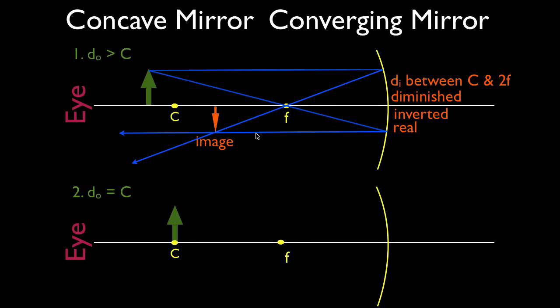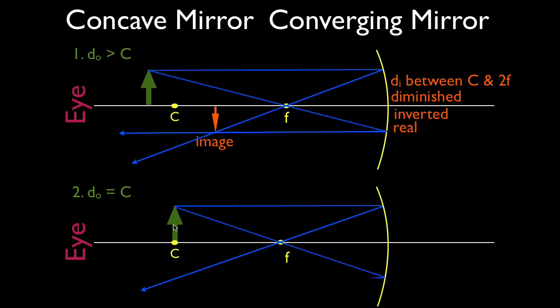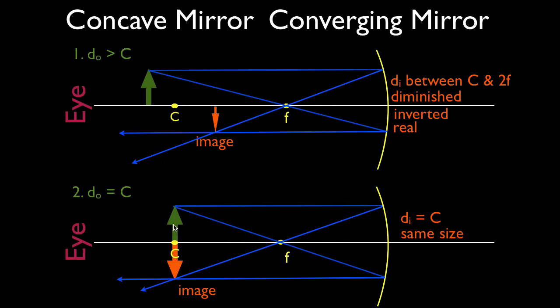Now we move the object so it is right at C. We draw the same two rays — parallel F, then F parallel — and you'll notice the image appears right at C as well, the same place as the object. When the object is at C, the image is always at C, always the same size, always inverted, and it's still a real image created by converging light rays.